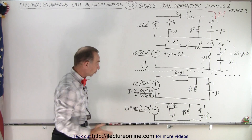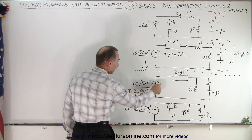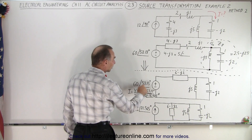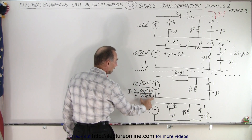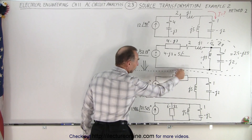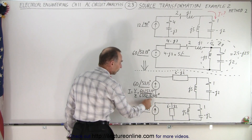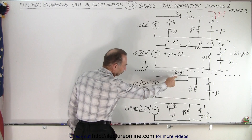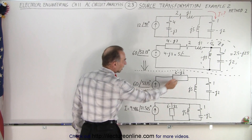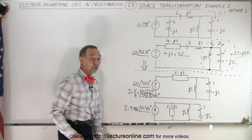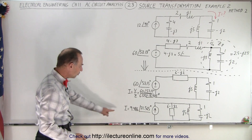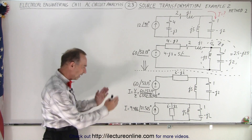To find the current source, we took the voltage divided by the impedance — so 60 with a phase angle of 53.13 degrees, divided by the impedance of this branch. If you convert this into magnitude and phase angle format, this is what you get. Notice you get something slightly bigger than 6, and the phase angle is the arctangent of 1 over 3, in the negative sense. So now we have the current of this current source.